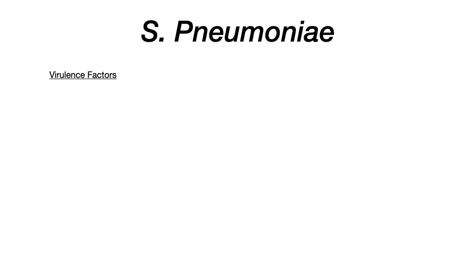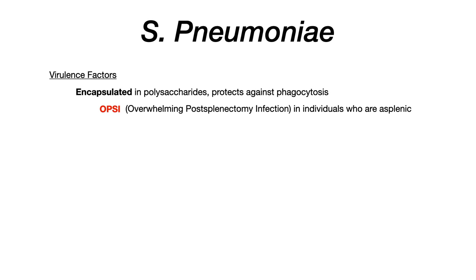Now let's talk about virulence factors — Strep pneumoniae's virulence factors are very high yield because they're very unique. The first, which I've already alluded to, is that Strep pneumoniae is encapsulated. There is a polysaccharide capsule that prevents this pathogen against phagocytosis, and that's really important for this bacteria to cause infections. Because of this dense polysaccharide capsule, it is known to cause OPSI — O-P-S-I — which stands for overwhelming post-splenectomy infection. OPSI occurs in individuals who are asplenic.